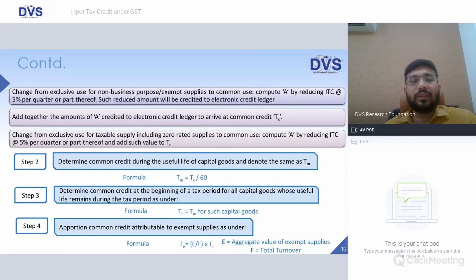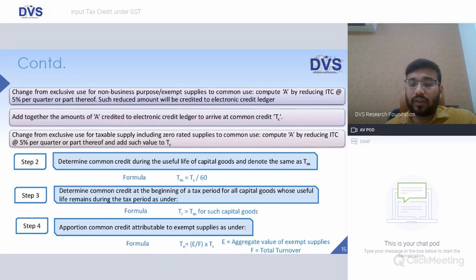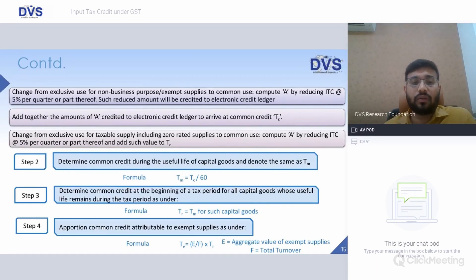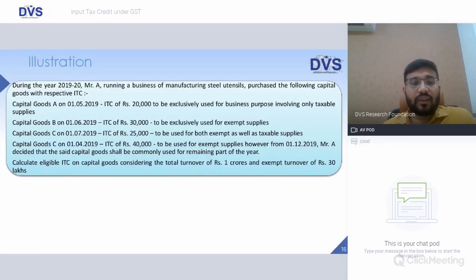In case of a switchover — where a capital good previously used for exempt supplies is now used for common use, or a capital good used exclusively for taxable supply is now also used for exempt supplies — the available ITC is reduced at the rate of 5% per quarter or part thereof, arriving at a discounted value for apportionment.